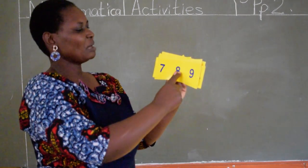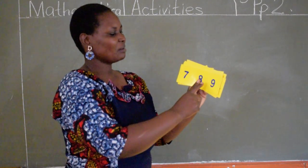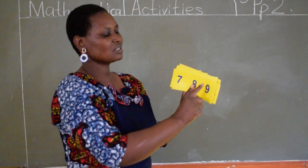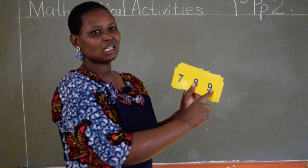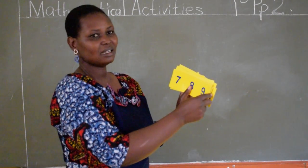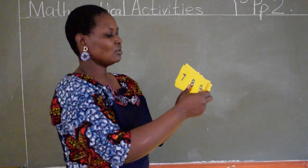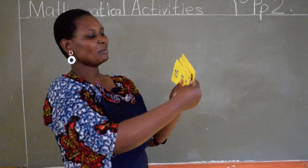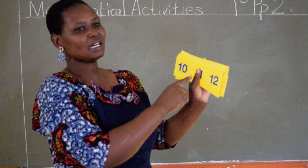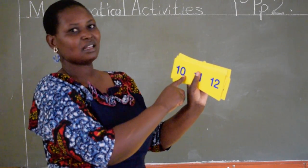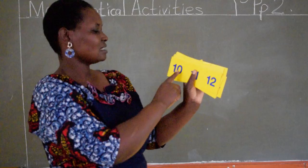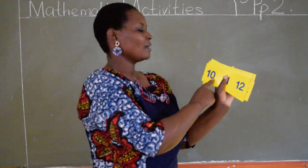From number 8, the number after number 8 is number 9. Which number comes after number 9, Kayla? Very good. The number that comes after number 9 — can you repeat that? Say number 10. Number 10 comes after number 9.